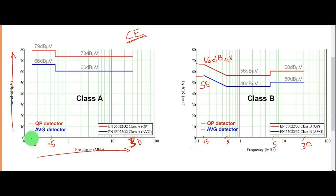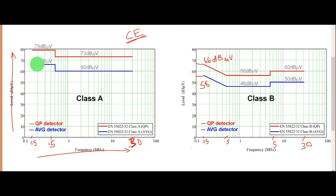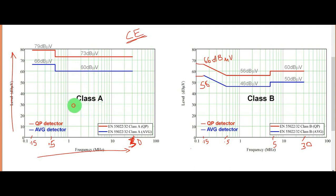Between the frequency 150 kilohertz to 500 kilohertz — that is 0.15 megahertz to 0.5 megahertz — your quasi-peak limit is 79 dB microvolt and your average peak limit is 66 dB microvolt. After that, from 500 kilohertz to 30 megahertz, your quasi-peak limit reduces to 73 dB microvolt and your average peak limit also reduces to 60 dB microvolt. This is for Class A.